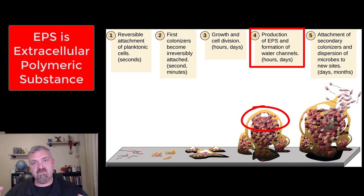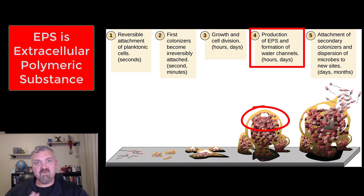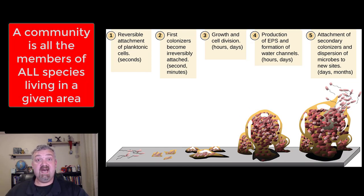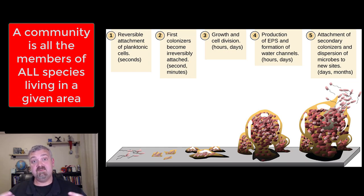This extracellular polymeric substance — I like to think of it as a capsule over a large community. This thick capsule forms on the outside, and on the inside you have channels for water and air. They are basically forming a microbial city. It is also important to note it's a community — these are not all the same organisms; they're not even all bacteria. Different types of organisms are working together.